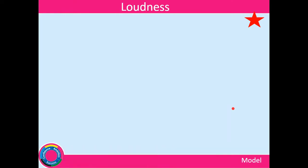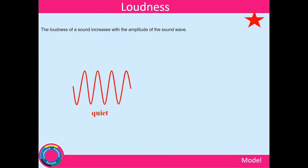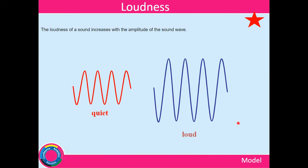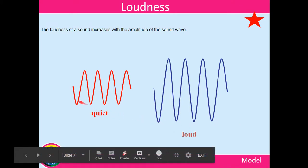So let's now move on to loudness. Loudness of a sound increases when the amplitude of the sound. If you've got a quiet sound, those waves will be very small. If you've got a loud sound, those waves will be very big. And it's about the amount of energy that that has. This has less energy than this. So therefore this sound will be quieter than that one.